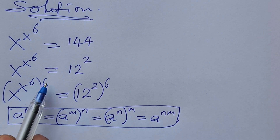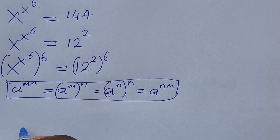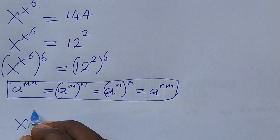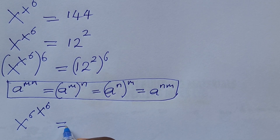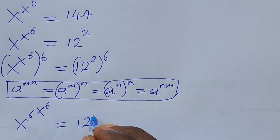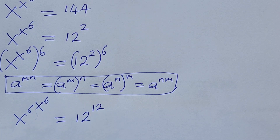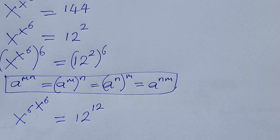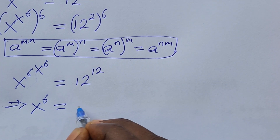Applying this rule, we can move the exponents inside. We get x to the power of 6, all raised to x to the power of 6, equal to 12 to the power of 12. We can now see that the base on the left-hand side is raised to itself, and the base on the right-hand side is raised to itself too. So we can equate the bases, giving us x to the power of 6 equals 12.